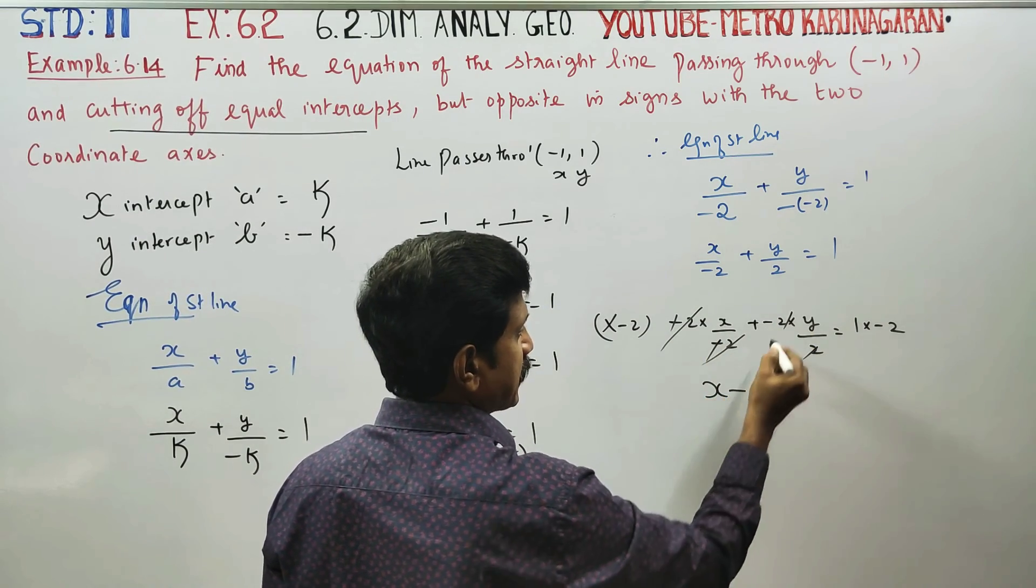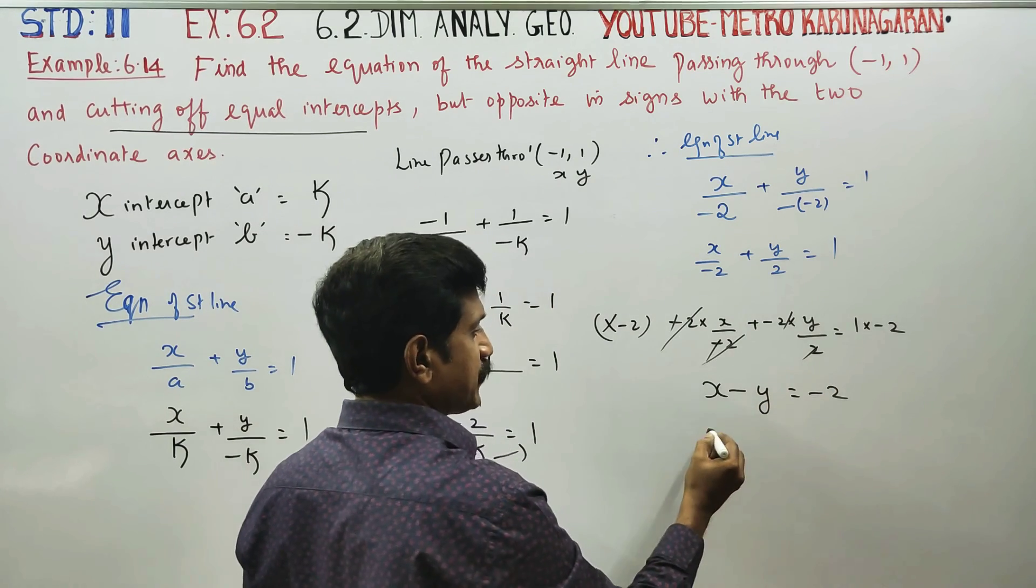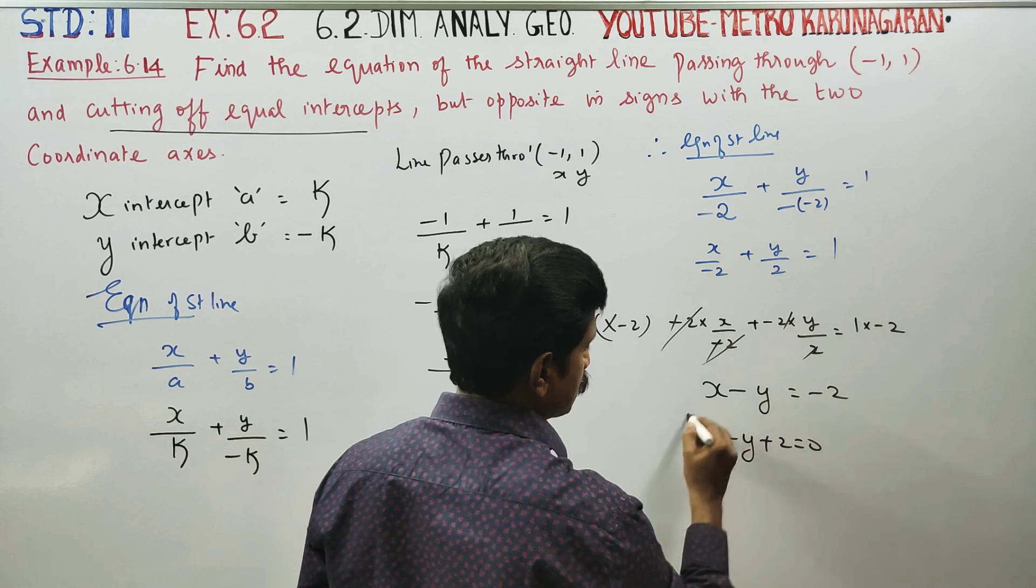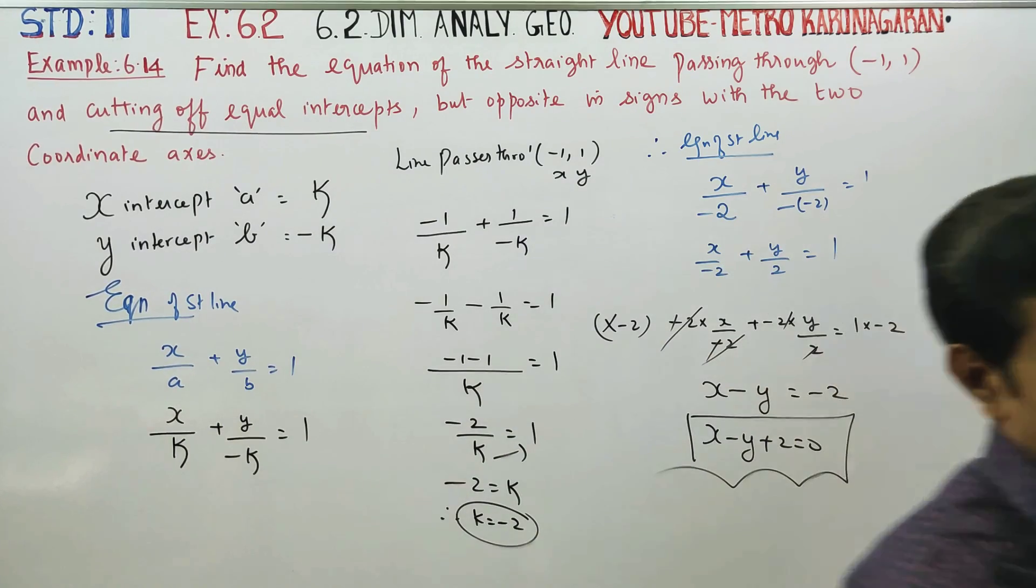Therefore, your answer will be x minus y is equal to minus 2, or x minus y plus 2 is equal to 0. This is the equation of straight line for this sum.